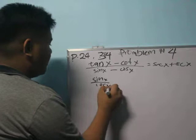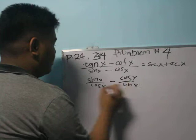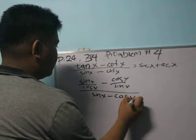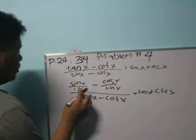tan equals sin x / cos x, minus cot equals cos x / sin x, all over sin x minus cos x equals sec x plus csc x. To add this,